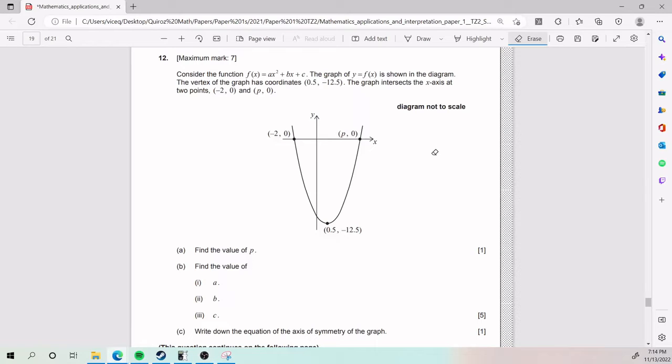Alright, and now for number 12, we need to consider the function f of x equals ax squared plus bx plus c, which is really just telling us that this is a parabola or a quadratic, which is the same thing that we see in the diagram.